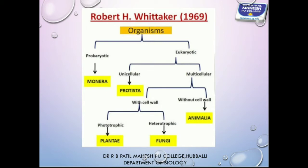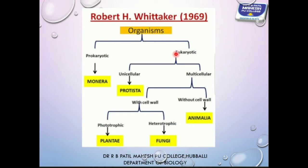According to Whittaker, organisms are broadly classified into two groups: prokaryotes and eukaryotes. In the case of prokaryotes, membrane-bound cell organelles are absent — such as mitochondria, plastids, Golgi apparatus, endoplasmic reticulum, and nucleus. Whereas in eukaryotes, membrane-bound organelles are present.